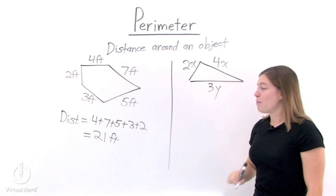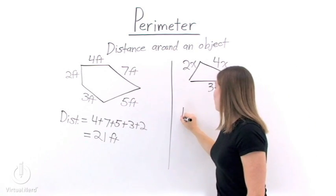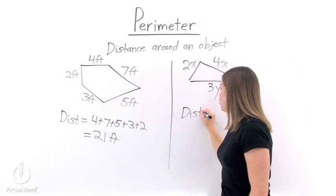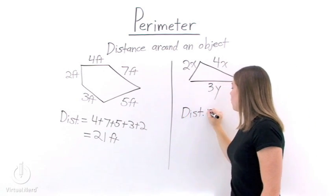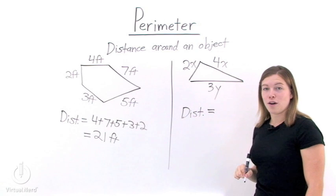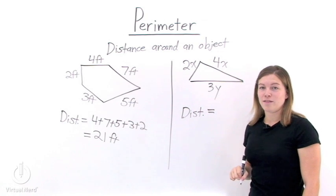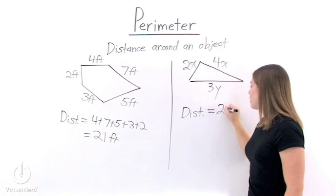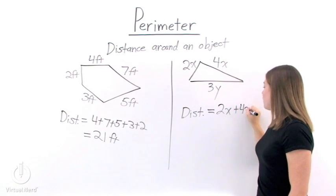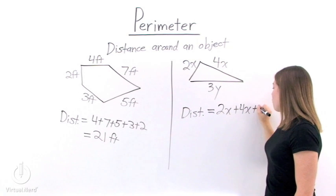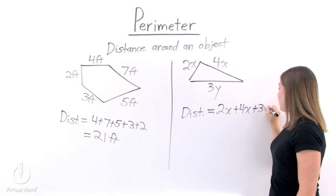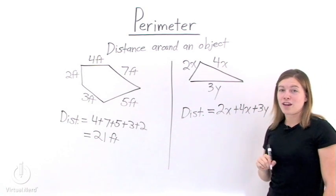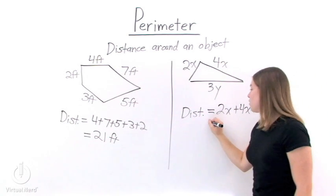Now to find the perimeter, we want to find the distance around this object. So we want to add up all of the sides. We'll have 2x plus 4x plus 3y. Now 2x and 4x are like terms,